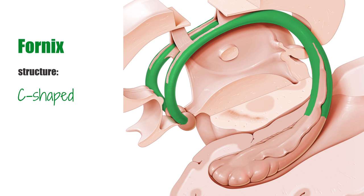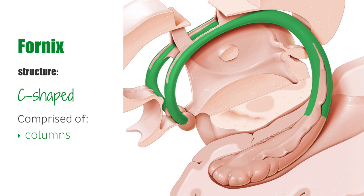The fornix is situated on both sides of the medial aspects of the cerebral hemispheres, with its components lying on both sides of the mid-sagittal plane and connecting across the plane. It is comprised of the columns of the fornix anteriorly, a body which forms the midline part of the fornix and is suspended from the corpus callosum by the septum pellucidum, a posterior part known as the crura which further extends posteriorly as the alveus, and finally the fimbriae of the hippocampus.